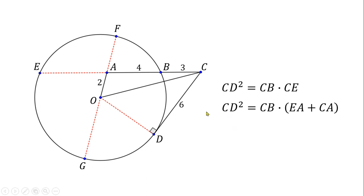Now, take note that CD is 6, CB is 3, and EA is unknown, and then CA is 7. So, if we substitute these values here, we get 6 squared equals 3 times the sum EA plus 7. Now, solving for EA, we get EA equals 5.